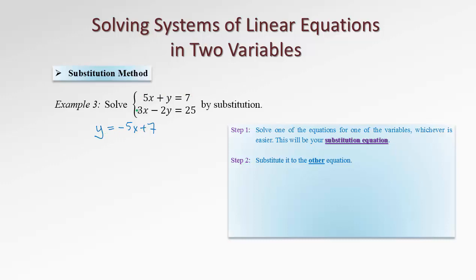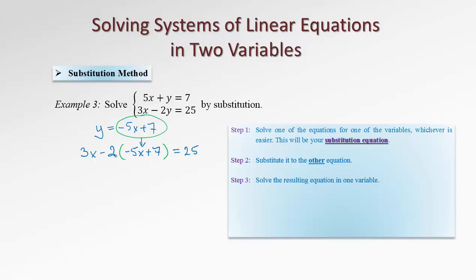We are going to plug this substitution expression into the other equation. Since the substitution equation was obtained from the first equation, we plug in to the second equation. So instead of y, we write negative 5x plus 7. We have 3x minus 2 times, and in the bracket we plug in the substitution expression, finishing the equation so it equals 25. After this step we obtain an equation with one variable only, so it's possible to solve for this variable. That's our third step — solve the resulting equation.